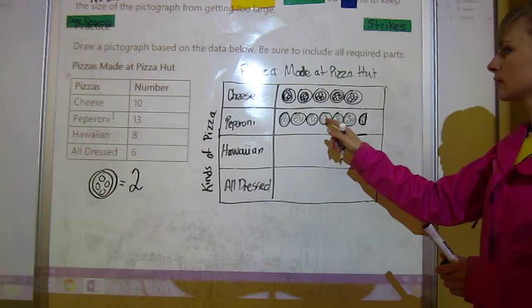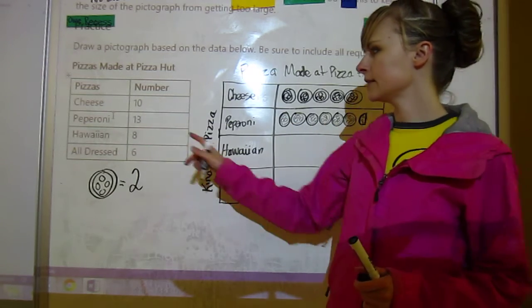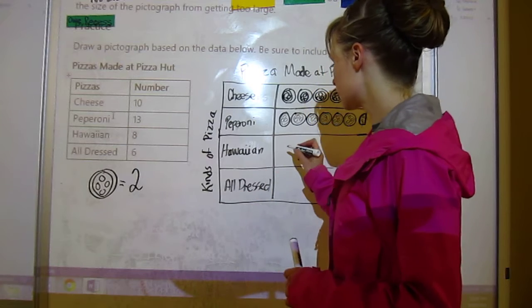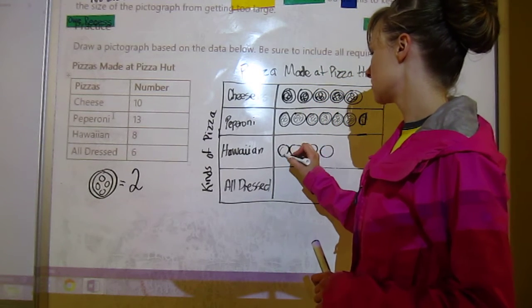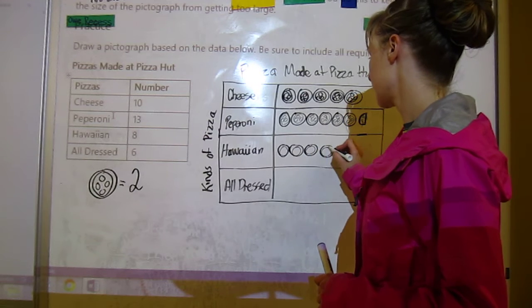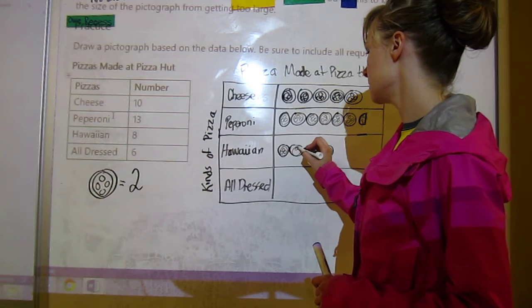One, two, three, four, five, six and a half to get 13. Hawaiian we've got eight, so we need to draw four because half of eight is four and four times two equals eight.